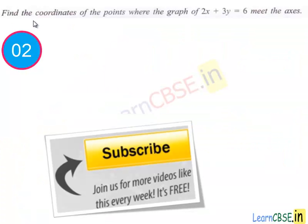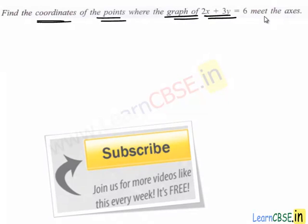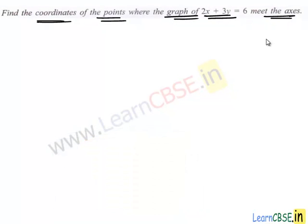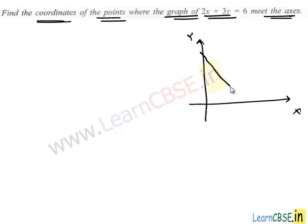Let's move to the next question. In this question we have to find the coordinates of the points where the graph 2x plus 3y is equal to 6 meets the x-axis. Here we take x and y axes, and we assume this is the graph of linear equation 2x plus 3y is equal to 6. According to the question we have to find out the points at which the graph meets the x and y axis.